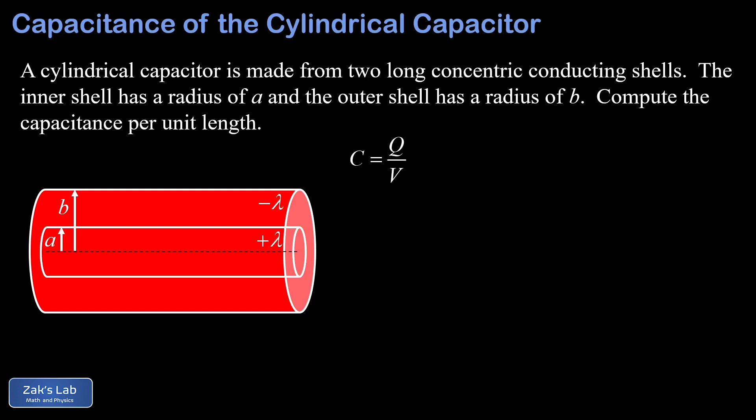What we're actually computing is capacitance per unit length for the long cylindrical capacitor. Capacitance per unit length is just charge per unit length divided by the potential difference. Charge per unit length we call lambda, so the capacitance per unit length is going to be lambda divided by V. The basic strategy is: we put those linear charge densities on the two shells, compute the potential difference V, then take lambda over V to get our capacitance per unit length.